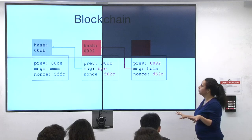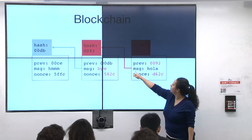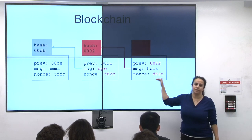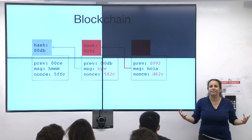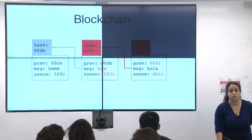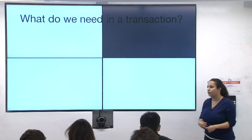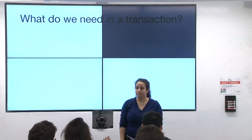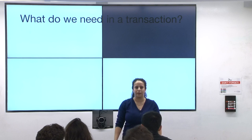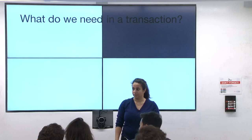Now let's go into more detail about what this 'message' actually is. We've talked about previous hash pointers, the nonce, and proof of work — but what actually goes inside a block? What goes inside a block are transactions. We're trying to build a payment system here. At a high level, what do we want in a transaction? Semantically: a sender, a receiver, and an amount.